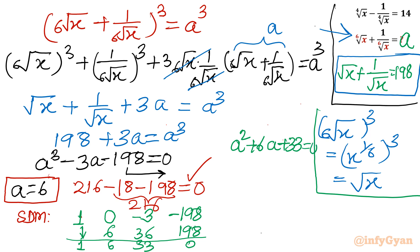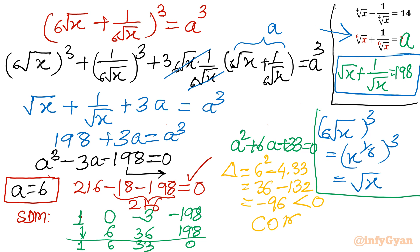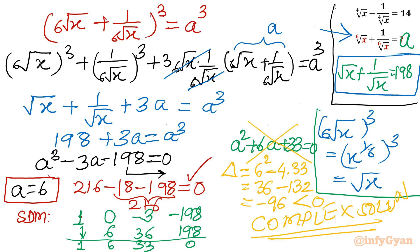Setting the quadratic equal to 0, I calculate the discriminant: delta equals 6 squared minus 4 times 1 times 33 equals 36 minus 132 equals negative 96. The discriminant is negative, so this quadratic generates only complex solutions, which we reject since x belongs to real numbers. Therefore a equals 6 is our only valid solution and the answer for the given expression.